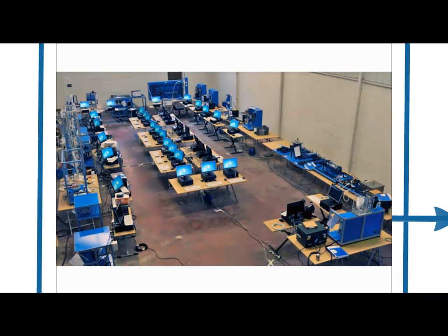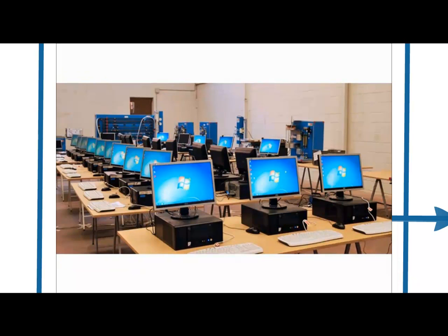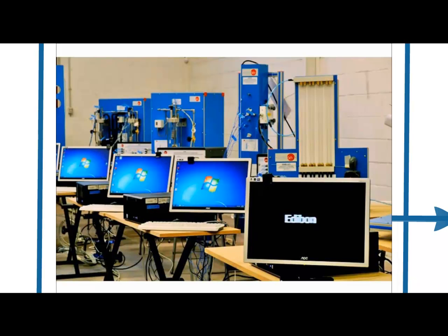This is an actual Edibon Escata Net setup, with Mini-Units and Mini-User stations. You can see that the Escata Net is made up of Mini-Escatas, which include the unit, a control interface, and a central computer.